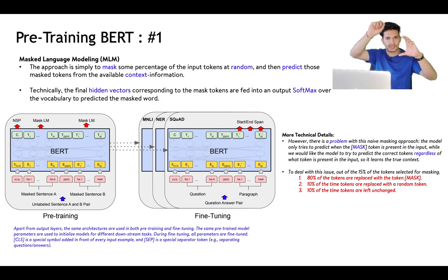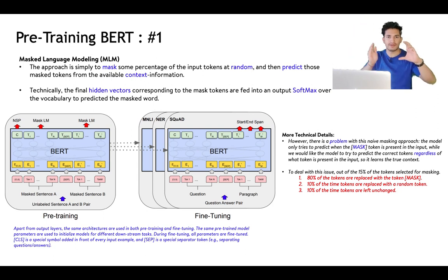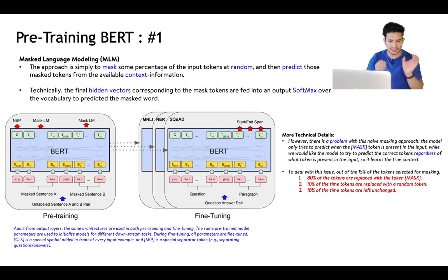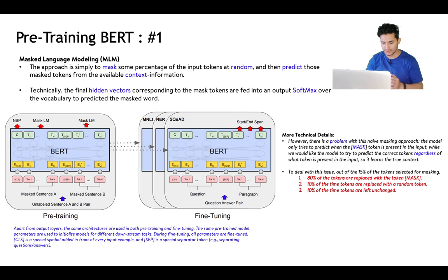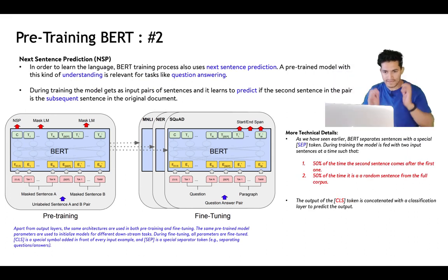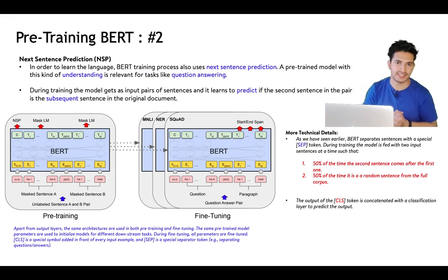The hidden vector representation of each word is passed through a softmax layer. The number of outputs equals the vocabulary size, and the model should assign the highest probability to the word that is actually masked. This masked language modeling forces BERT to develop a deep sense of context and language.